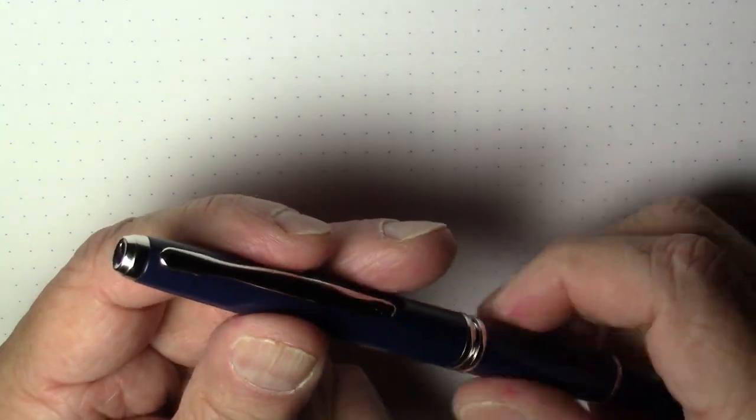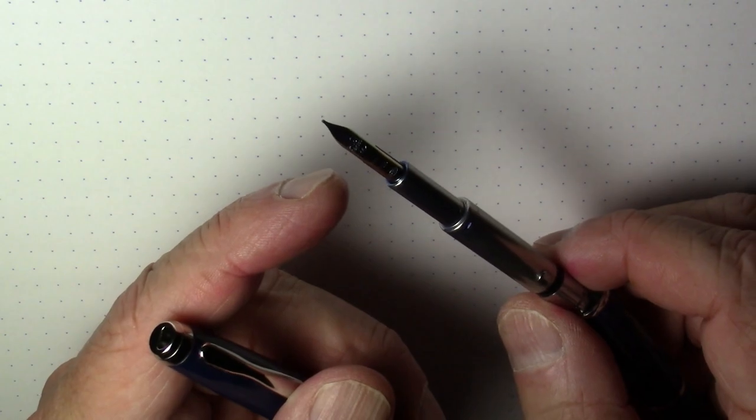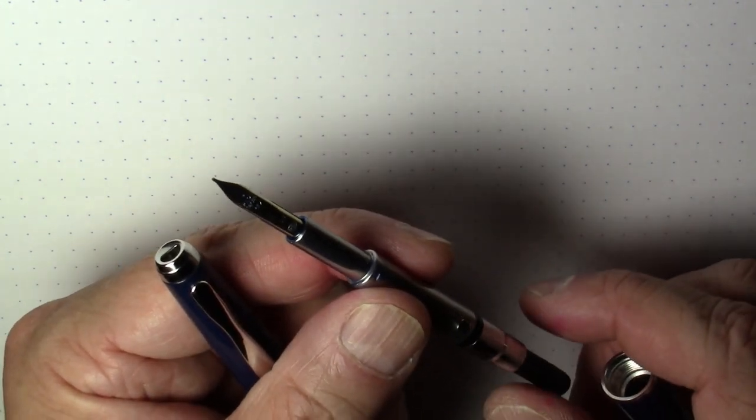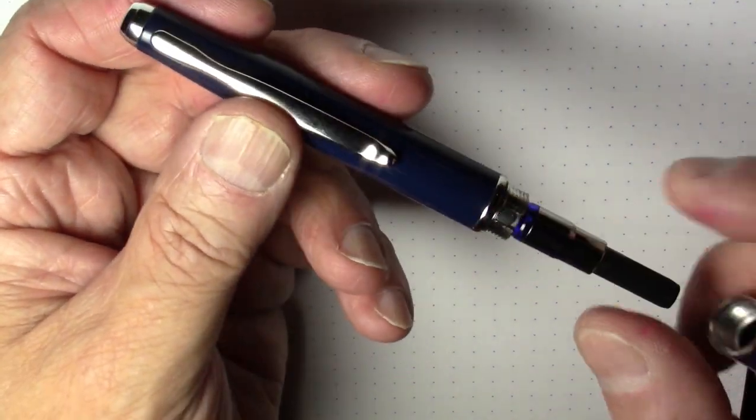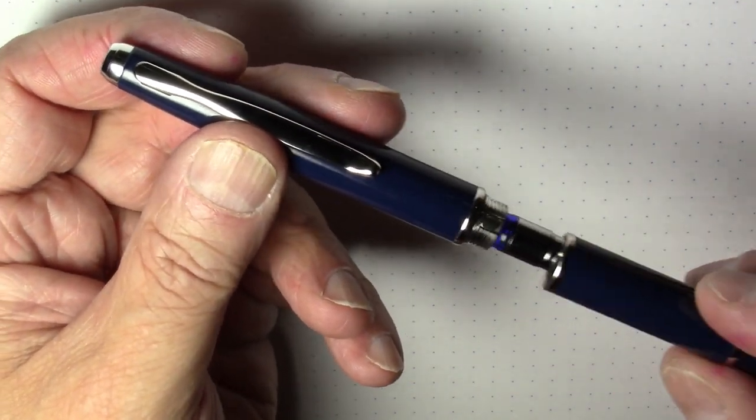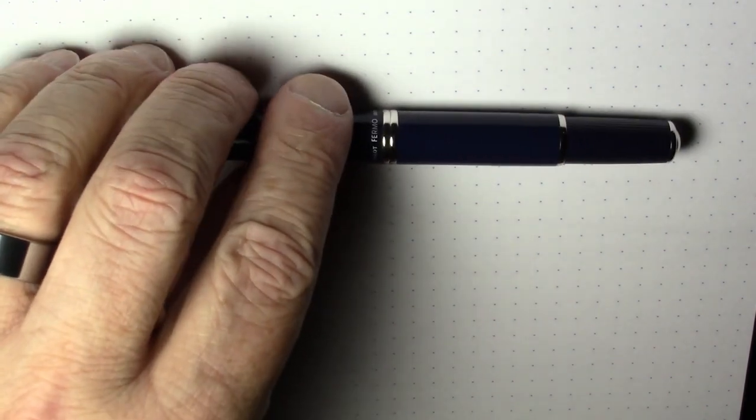The nibs on these are the standard Pilot Vanishing Point nib units. So you can swap them and interchange them. As a matter of fact that's exactly what I did. This typically does not come with a gold nib. So I swapped it out for a gold nib from another Vanishing Point that I had that had a body with some damage to it. So I just swapped the nib unit, the gold nib unit from that one for the steel nib unit that was in this one.